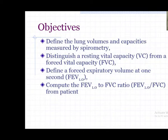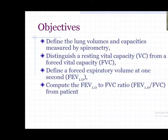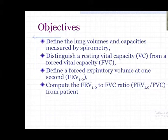The objective is to define the lung volume and capacity as measured by spirometry. We can distinguish between resting vital capacity - breathing slowly from maximum inspiration to end expiration - and forced vital capacity. There are two types: normal and forced. Force expiratory volume in one second (FEV1) is the amount of air expired in one second, assessing major airway functioning. From FVC and FEV1 we can determine their ratio to differentiate between obstructive and restrictive airway disease.